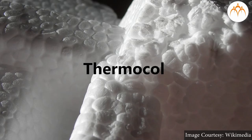Thermocol is the liquid form of polystyrene. When heated above 100 degrees Celsius it becomes solid when cooled down. When poured in a mold it can be given any desired shape. It is a shock absorbent and hence used for protection of delicate objects.